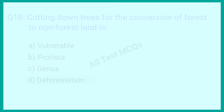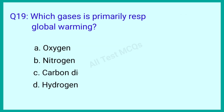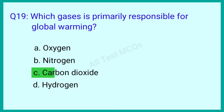Question number 19: Which gas is primarily responsible for global warming? The correct answer is option C: Carbon dioxide.